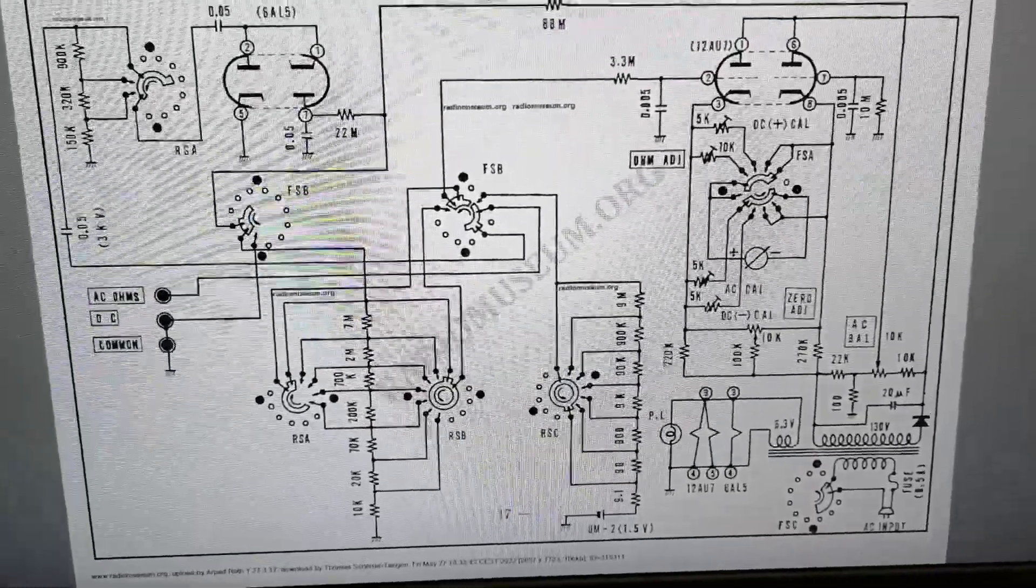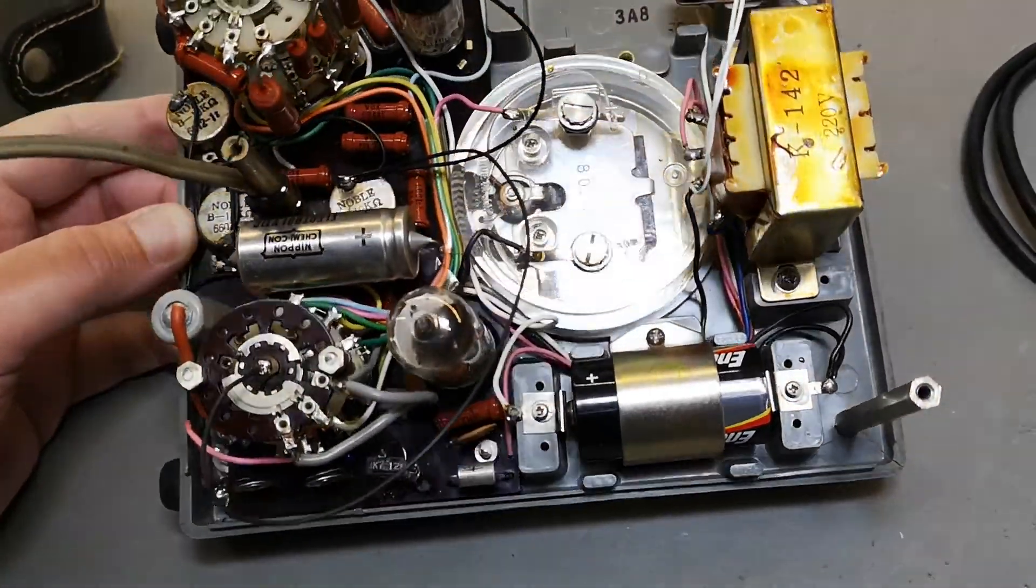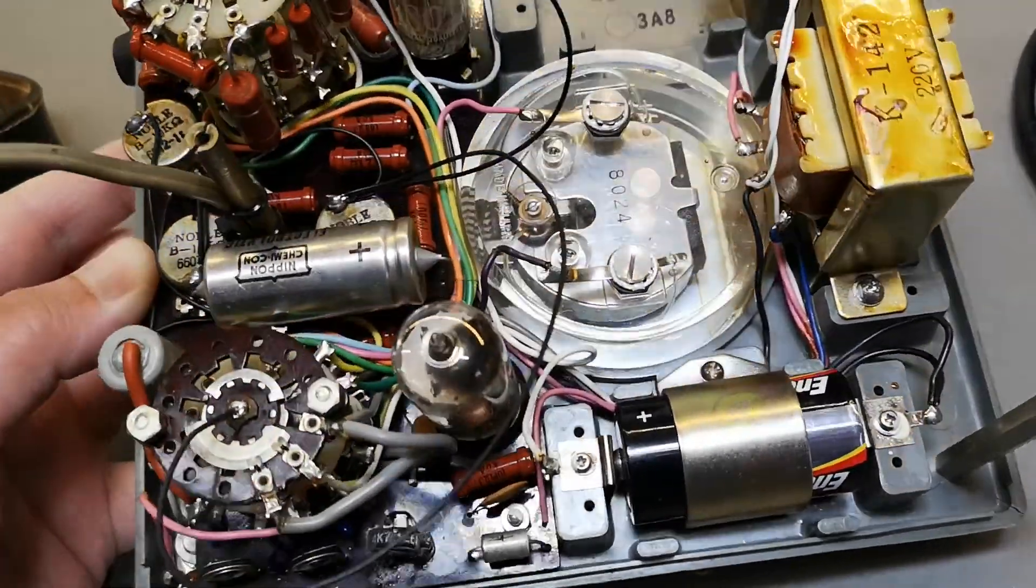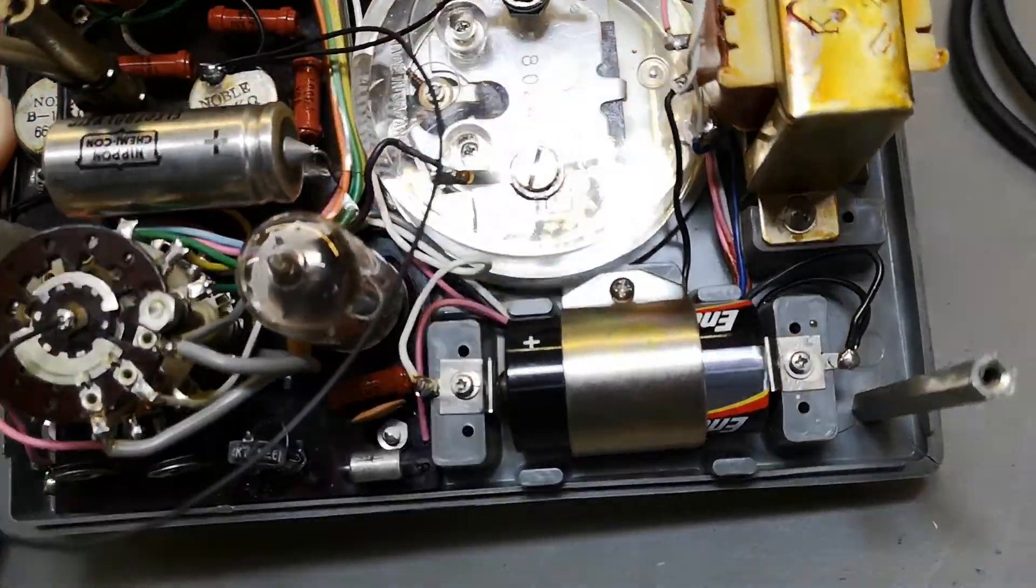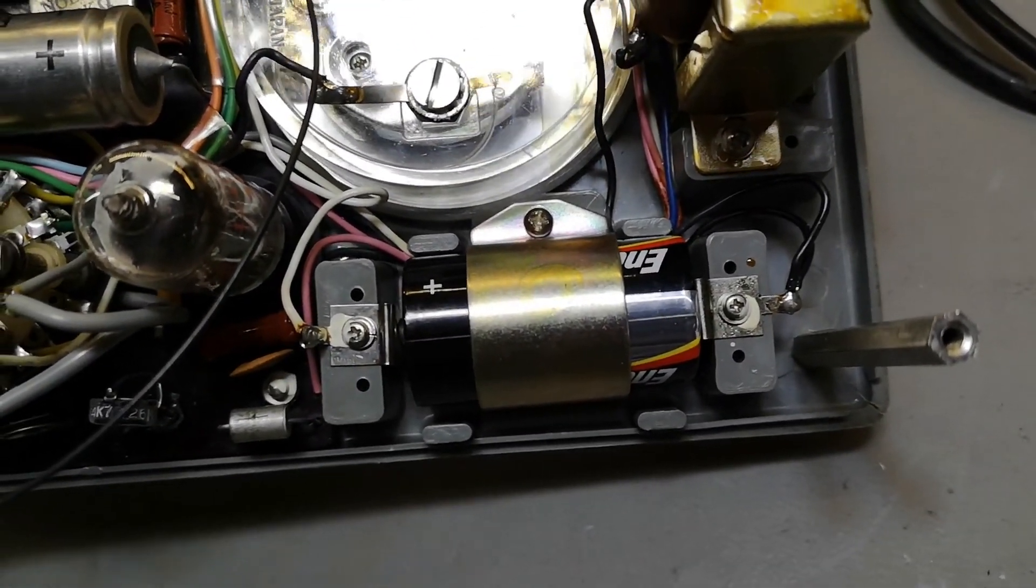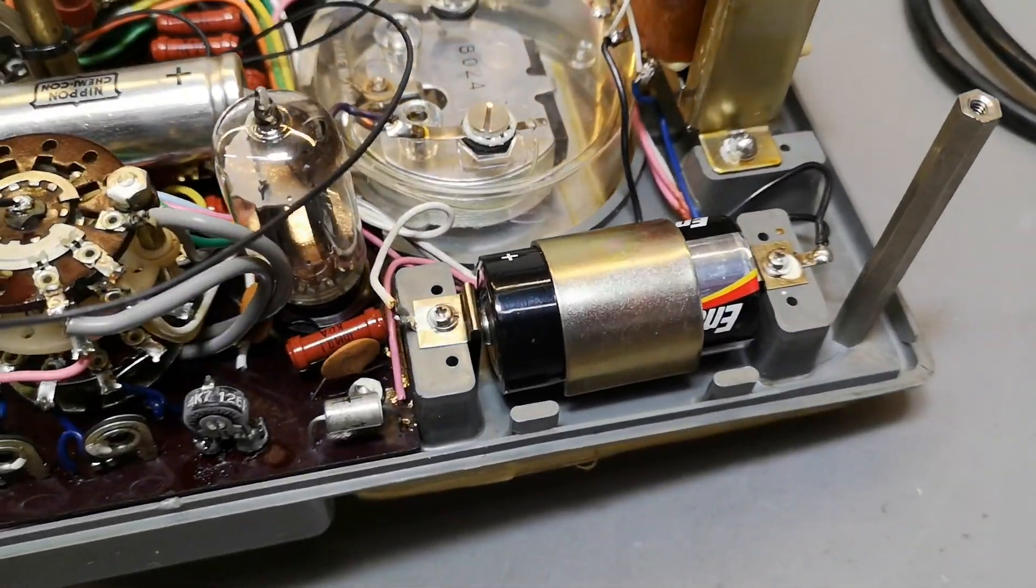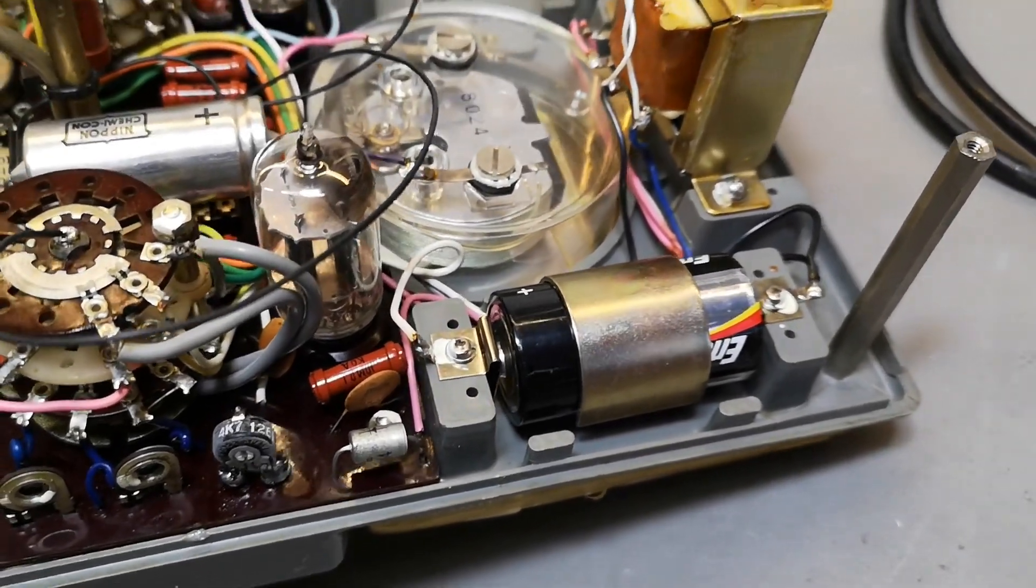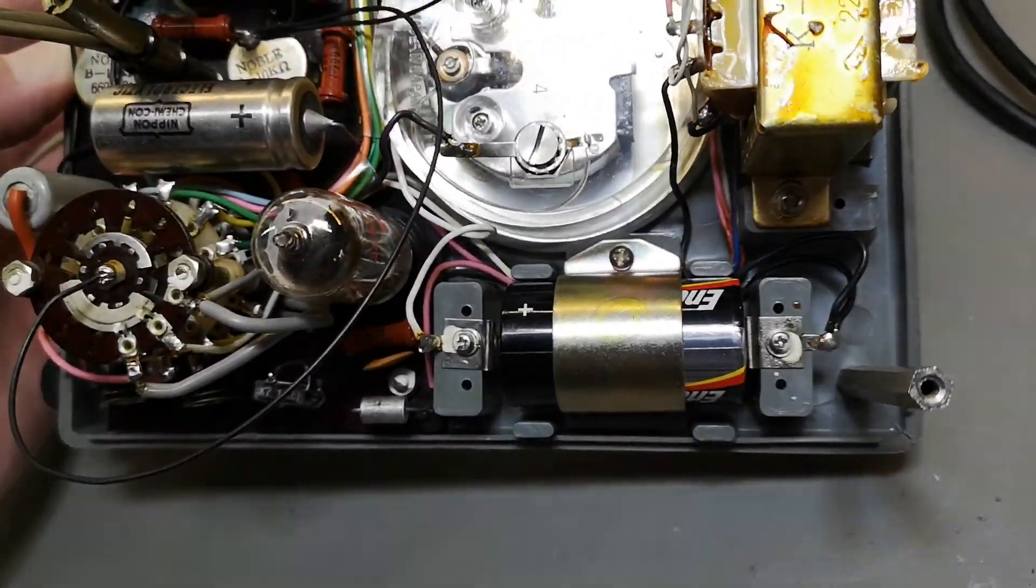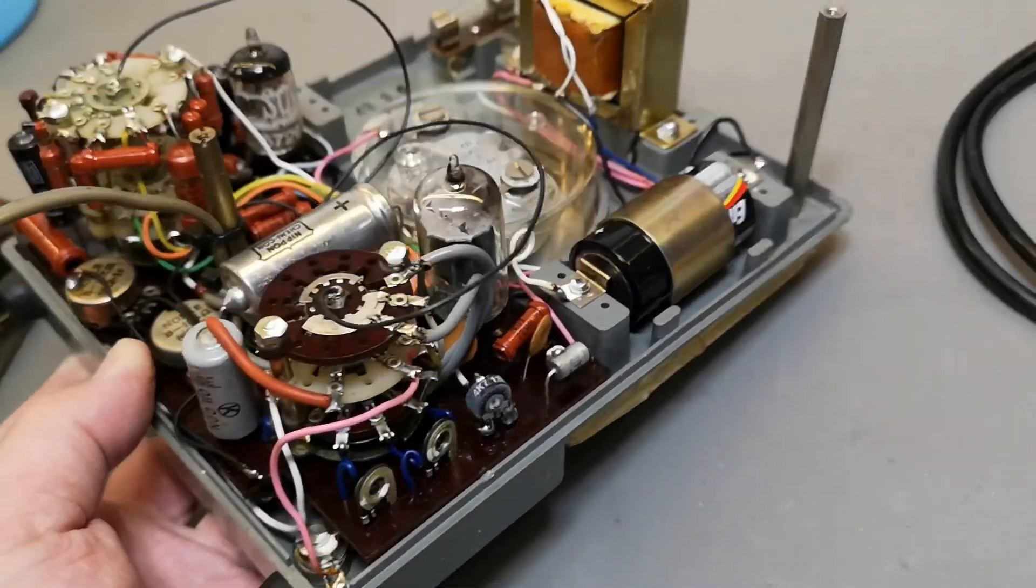So now we're inside this beautiful vacuum tube voltmeter and we see those two tubes. The first thing I see is this battery and I just measured the voltage - it's 1.55 volts, so it's brand new. I really would like to know when was this installed or when was this instrument used for the last time. That is not normal to find a battery that is brand new inside stuff like this.